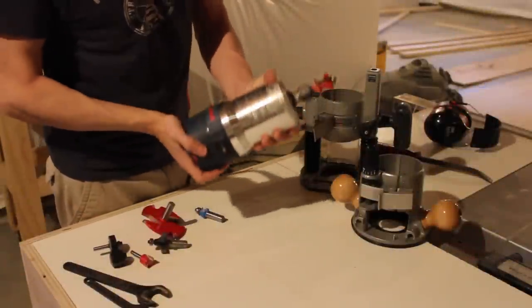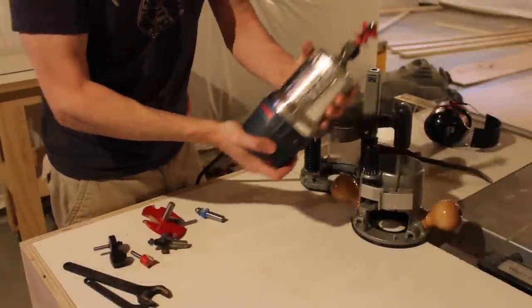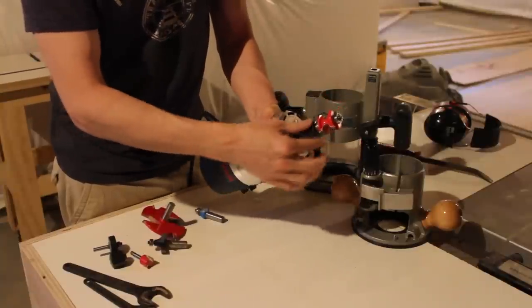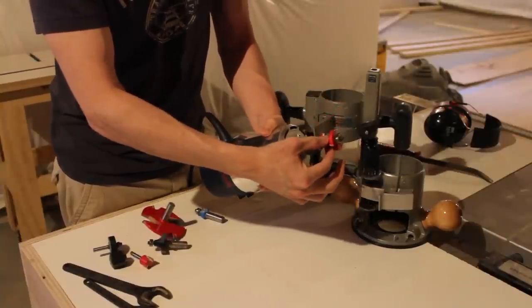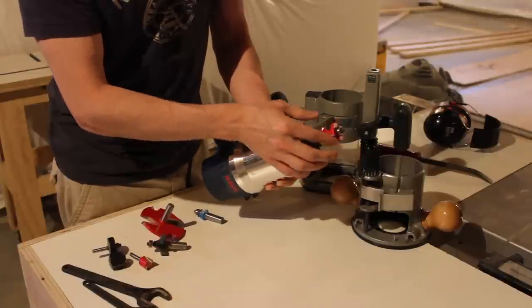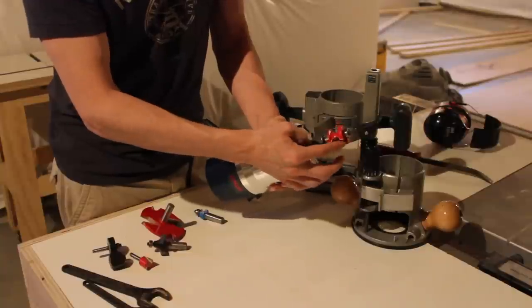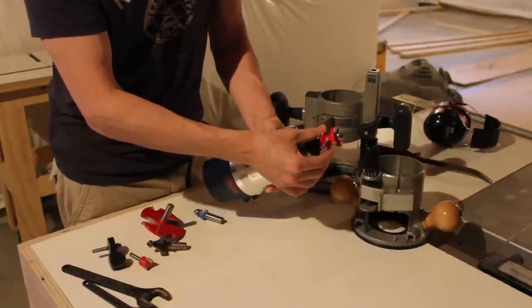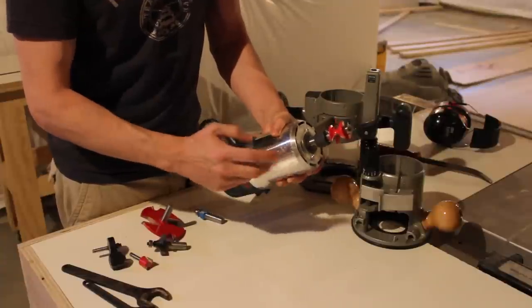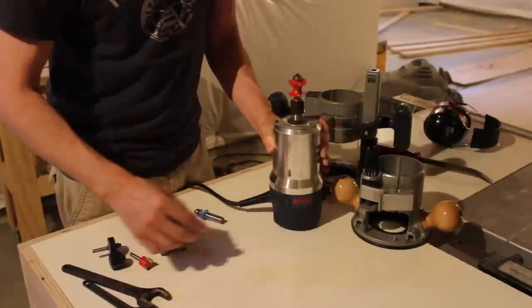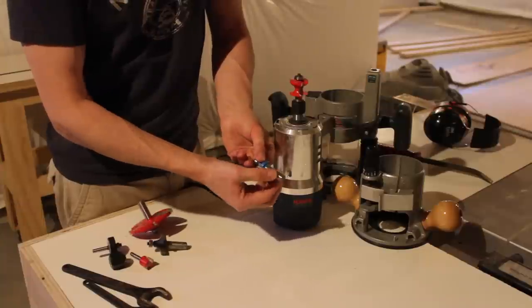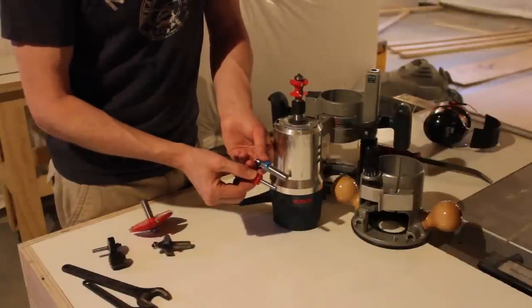Let's talk about the basic router first. A router really is just a motor that has an output shaft that allows you to put on a router bit. A router bit is just a piece of metal that's very sharp that has a certain profile on it. Router bits generally come in two different types of diameters: router bits that have a half inch shaft and router bits that have a quarter inch shaft.